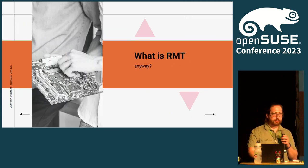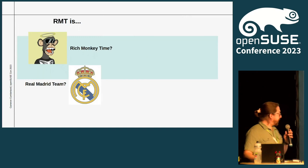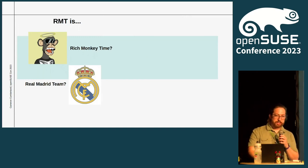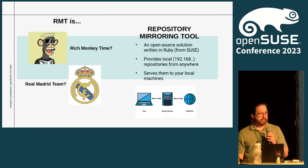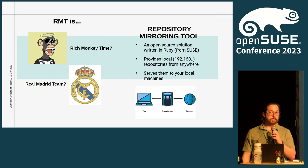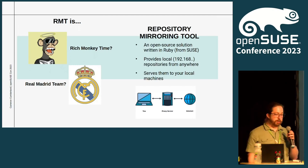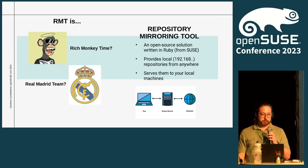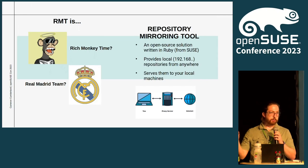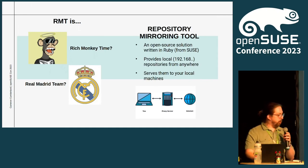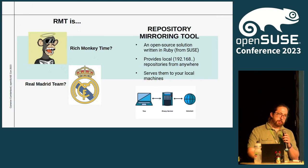So what is RMT anyways? I keep using this acronym — tech is full of acronyms. These are some potential acronyms for RMT. We have 'rich monkey time' — I'm sure everyone remembers the hellscape that was 2021. But actually, it's a Repository Mirroring Tool. It's an open source project written in Ruby from SUSE. It provides local repositories from anywhere accessible on the open web — you can pull them down to your server internally and serve them to your clients over LAN. It's essentially a proxy, but it has some nice functionality.